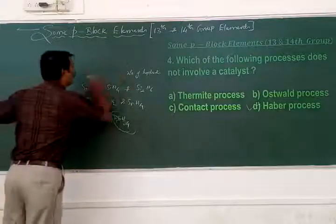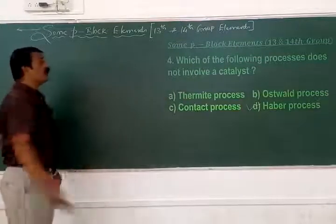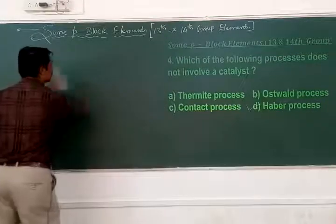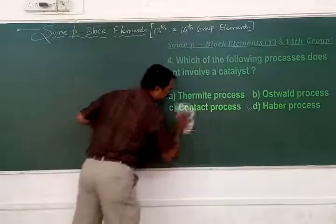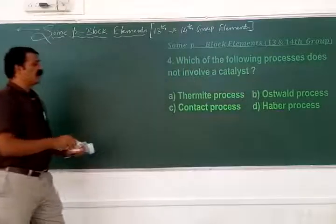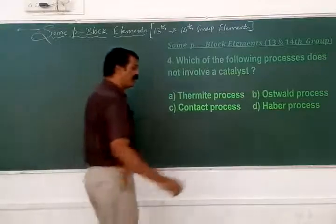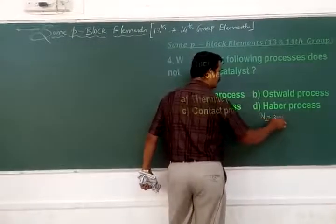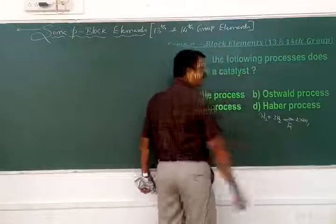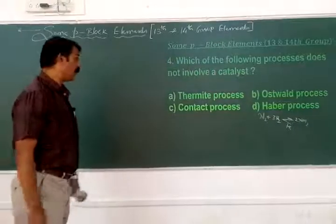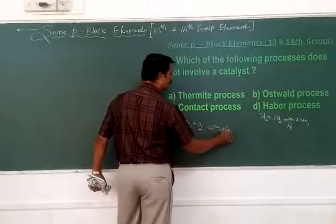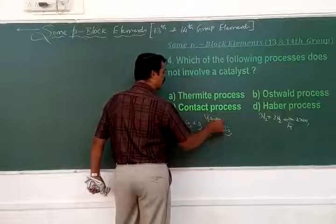The fourth question asks which process does not involve a catalyst. In the Haber process, nitrogen combines with hydrogen in the presence of iron powder as catalyst, with molybdenum as a promoter, to form ammonia. In the Contact process, the key reaction is oxidation of sulfur dioxide to sulfur trioxide, using vanadium pentoxide or platinum as catalyst.